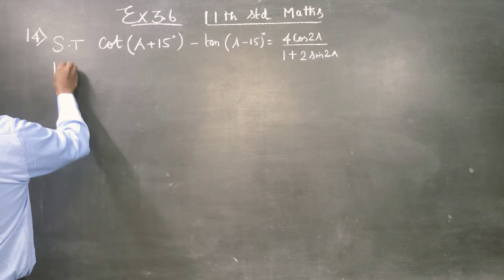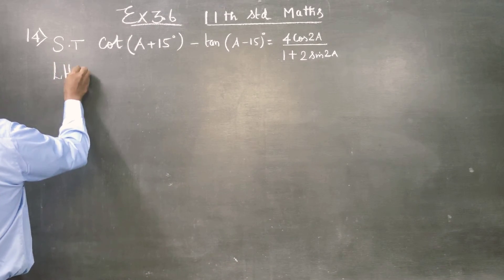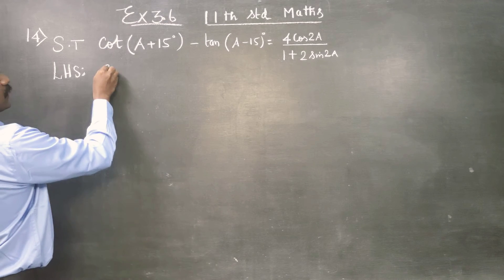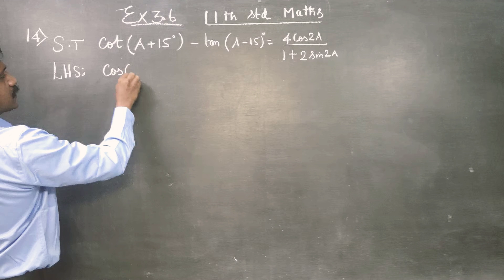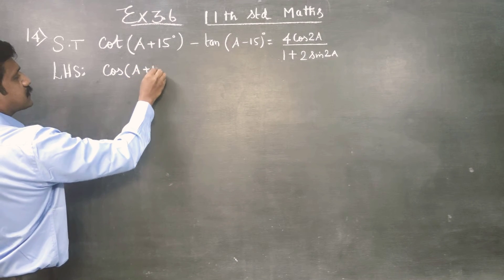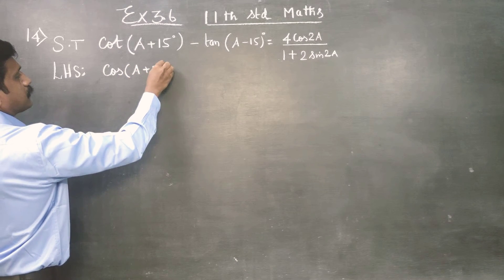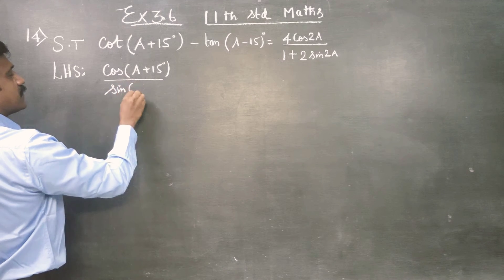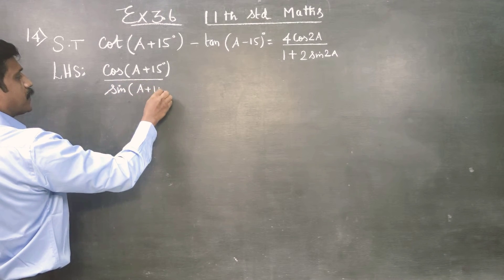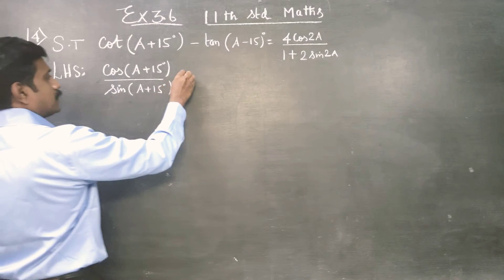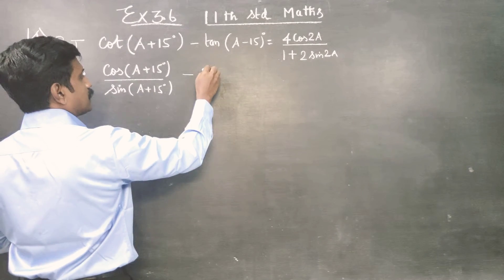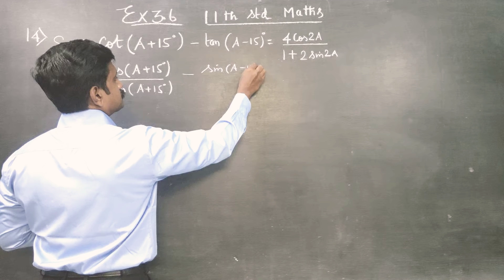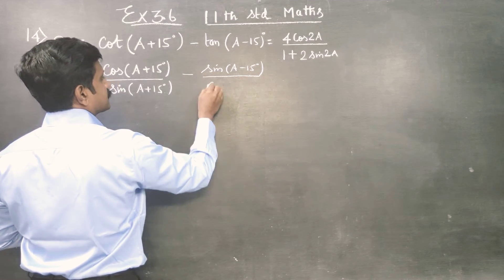I am going to start with my LHS. Cot can be written as cos by sin. Tan can be written as sin by cos.